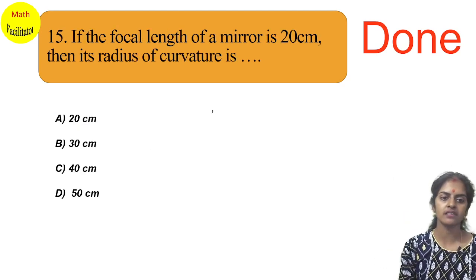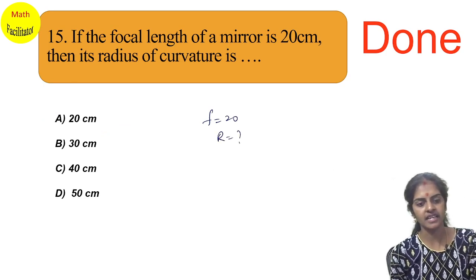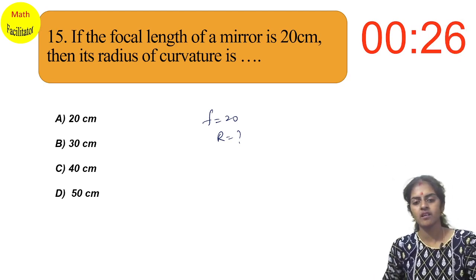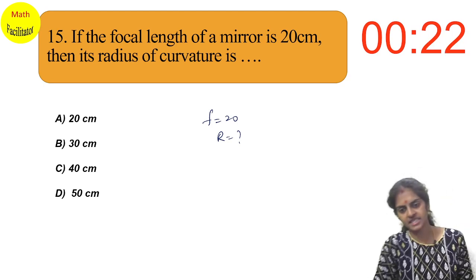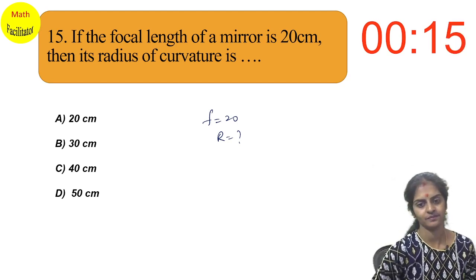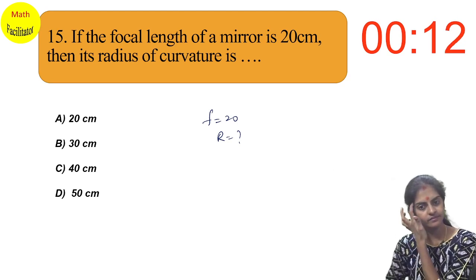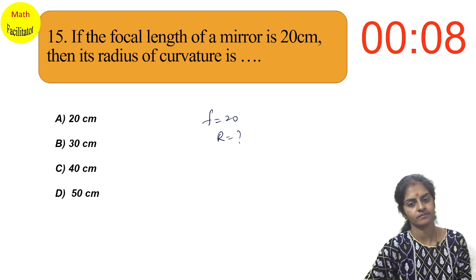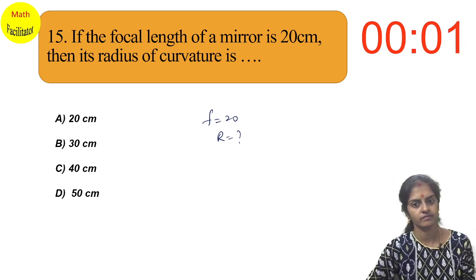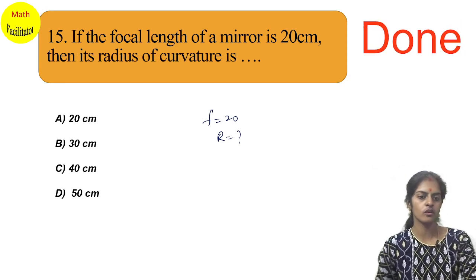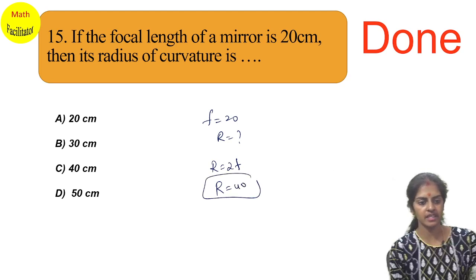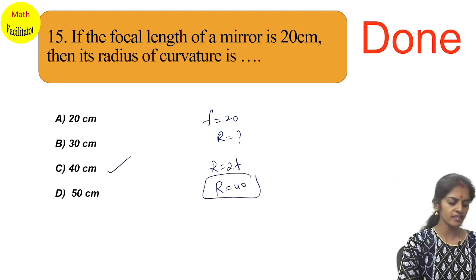If the focal length of a mirror is 20 cm, what is the radius of curvature? We already know the relation: R = 2f. So R = 2 × 20 = 40 centimeters. This was also asked in the TS RJC 2016 exam.